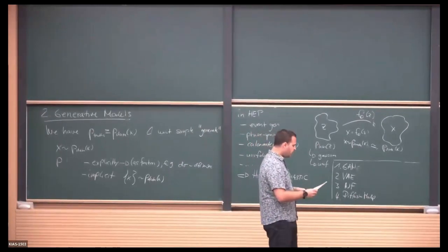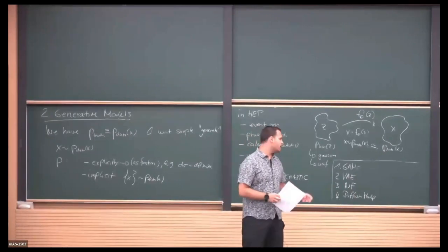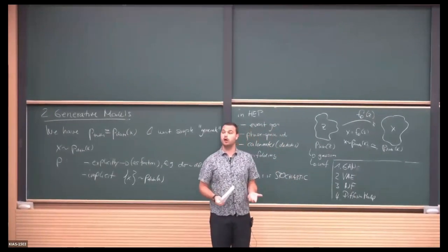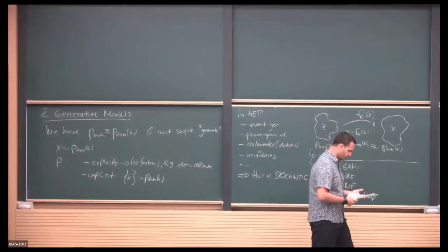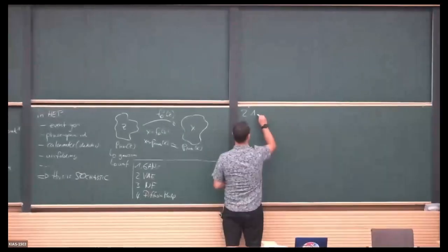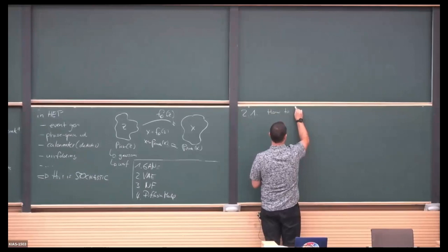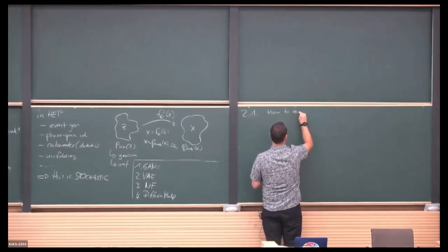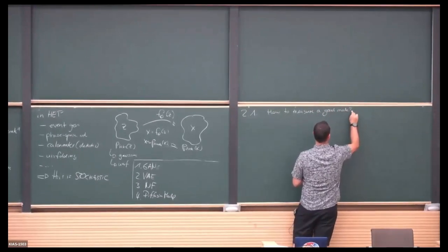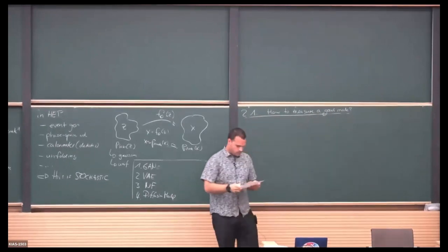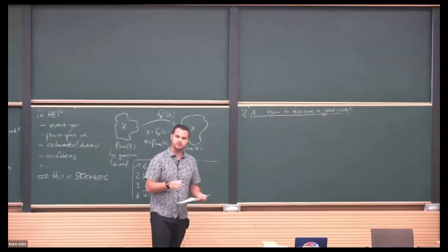How can we determine whether a model is useful or not? There are many, many options — I'm just going to mention some of them. One of the first options, which should be familiar from yesterday, is: let's assume we have both p-model explicitly given and p-truth or p-data given. In high energy physics, if you want to model differential cross-sections, this is something you can write down and calculate — at least in principle you can compute it.